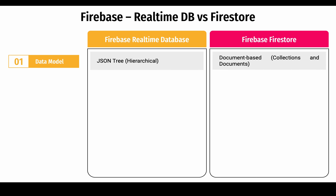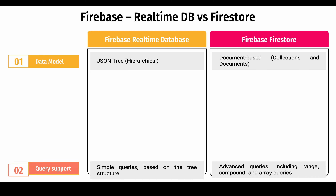The first difference is the data model. Real-Time Database uses a single JSON tree to store data, making it more like a hierarchical key-value store. Firestore, on the other hand, uses a document-based model and stores data as collections and documents, similar to a file system hierarchy. Each document can contain nested data, which provides flexibility for more complex data models.